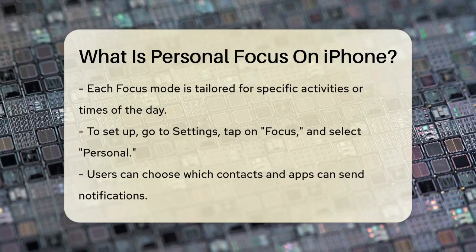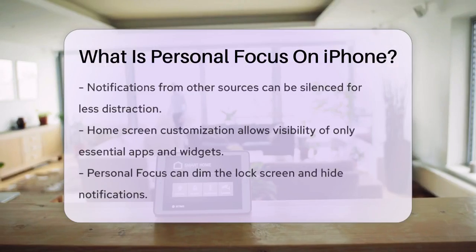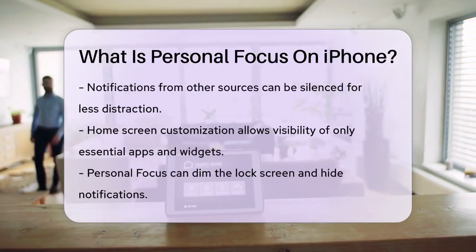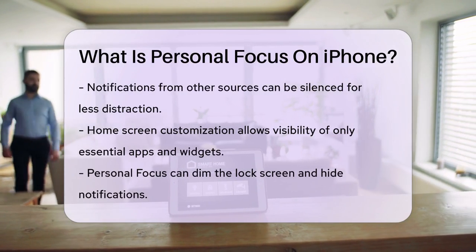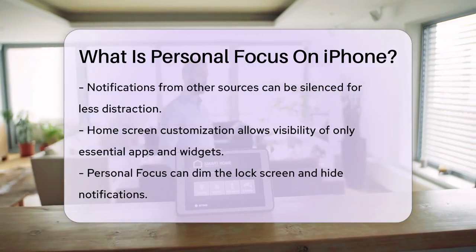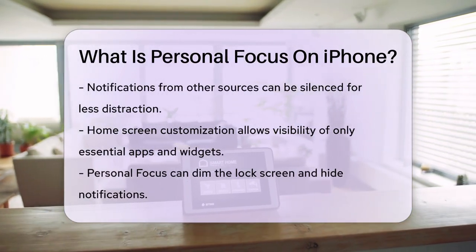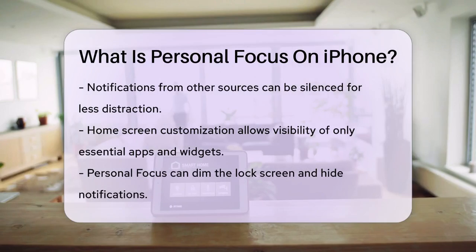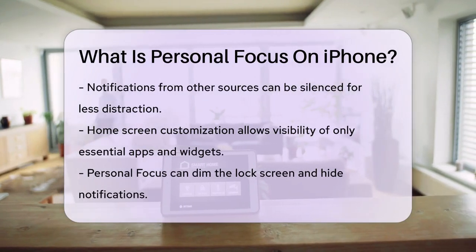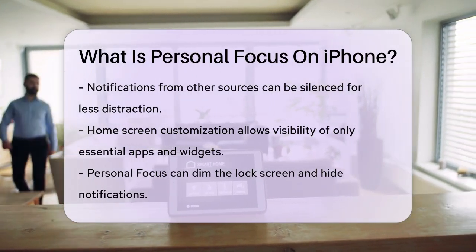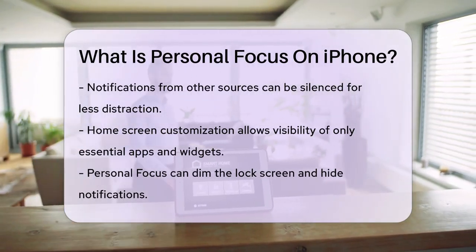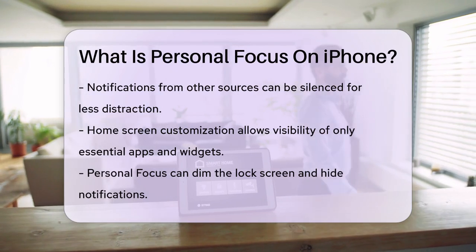For example, if you're in personal focus mode, you might only see notifications from family members or close friends, and your home screen might display apps related to personal activities, like social media or messaging apps. You can also dim your lock screen and hide notifications to reduce visual disturbances.